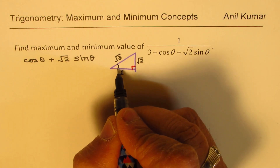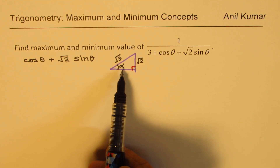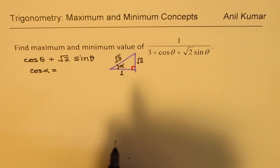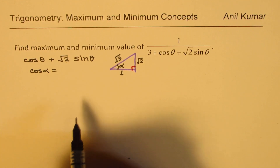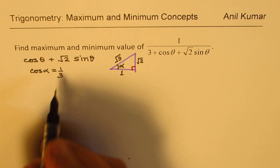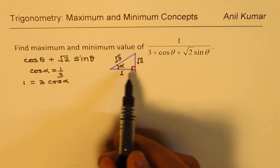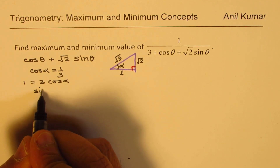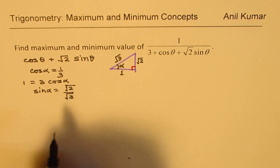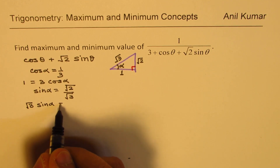If we consider this angle to be α, then cos α = 1/√3, which means 1 = √3 cos α. Similarly, for this triangle, sin α = √2/√3, so cross-multiplying gives √3 sin α = √2.